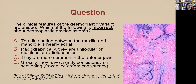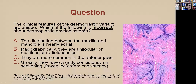The desmoplastic variant of ameloblastoma has unique clinical features. Key characteristics: the distribution between the maxilla and mandible is nearly equal; they are more common in the anterior jaws; and they have a gritty consistency on sectioning. Importantly, radiographically they are not unilocular or multilocular — they are actually mixed density lesions due to that gritty consistency. This contrasts with most ameloblastomas, which are seen more commonly in the posterior.